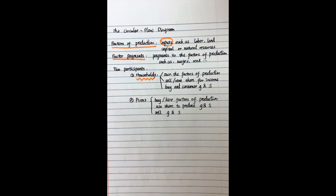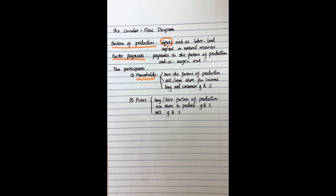Another participant is firms. Firms can buy and hire those factors for production, and then use those factors of production to produce goods and services. Firms or corporations will also sell those goods and services.